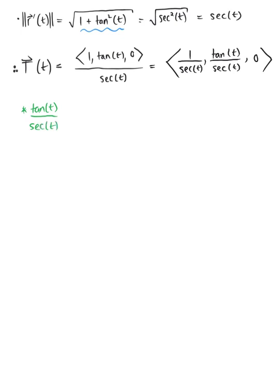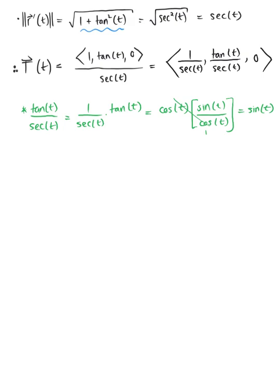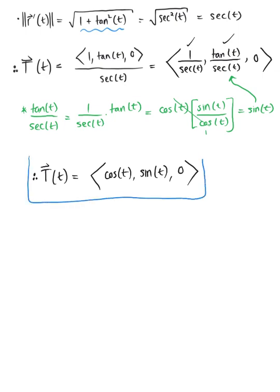We can separate tan(t)/sec(t) as (1/sec t) × tan(t). Using trig identities, 1/sec(t) is cosine of t, and tangent equals sin(t)/cos(t). Those cosines cancel each other right out, leaving us with just sin(t). So the simplified unit tangent vector T(t) is ⟨cos(t), sin(t), 0⟩. This is the first portion of our answer.